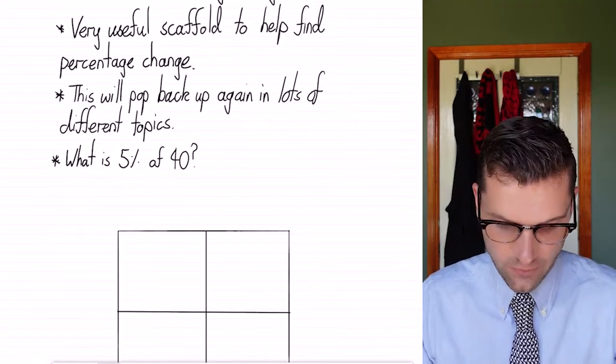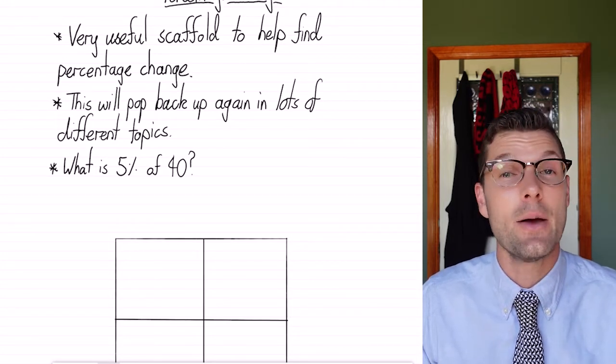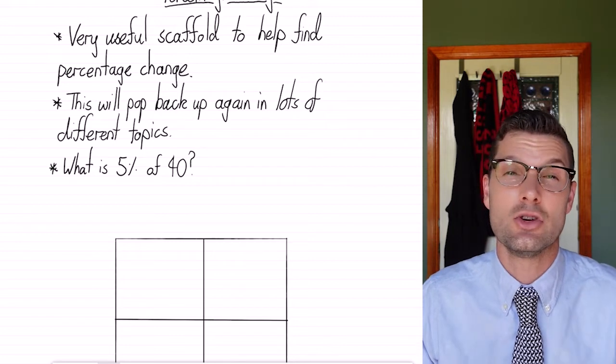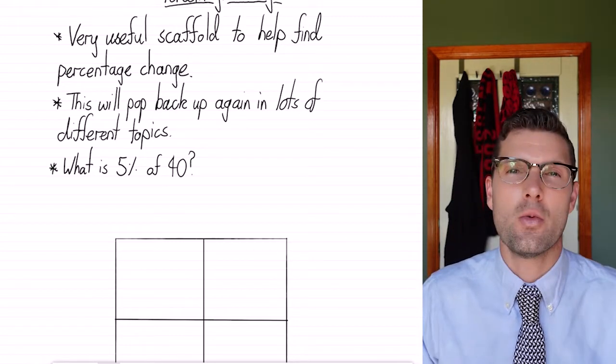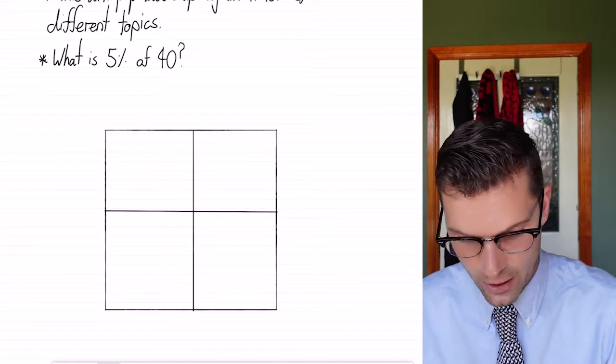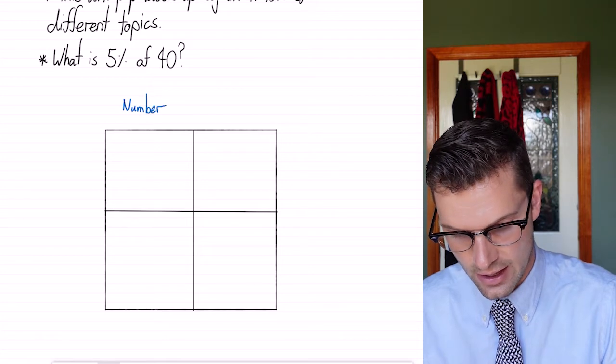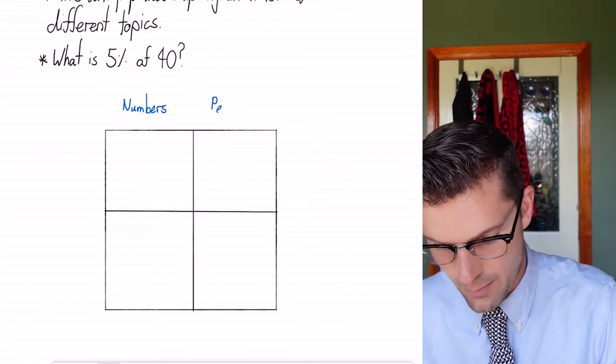So the question we could have is what is 5% of 40? We know how to work this out very easily by timesing it by 0.05, but we're going to see how we could do this in a different fashion. So what these two boxes mean is that we've got our physical numbers on this side. In this first column we're going to have our physical numbers and in this side we're going to have our percentages.